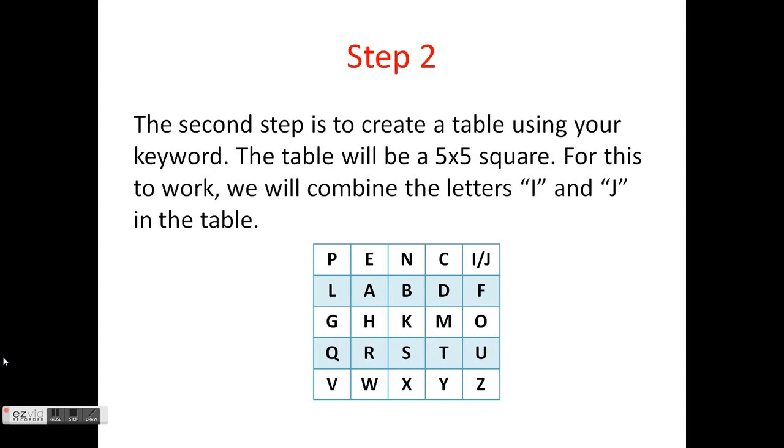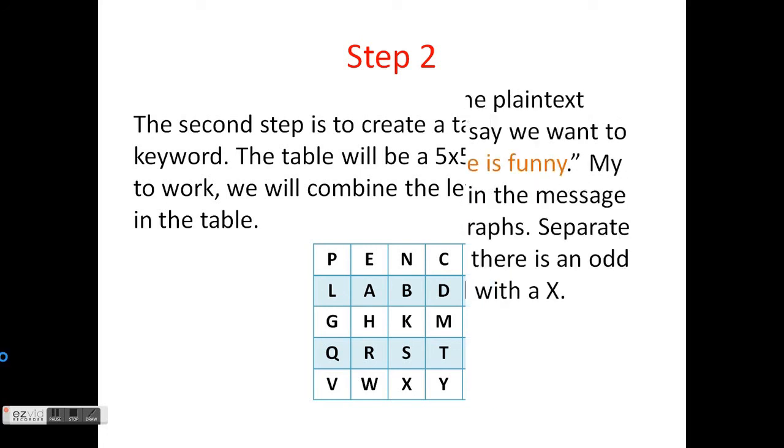As you can see, I started in the top left corner with P, and then filled in the rest of the row with letters in pencil. I combined my I square with J. After my L, I started with the first letter in the alphabet that I had not used, which is A, and continued until my square was full.